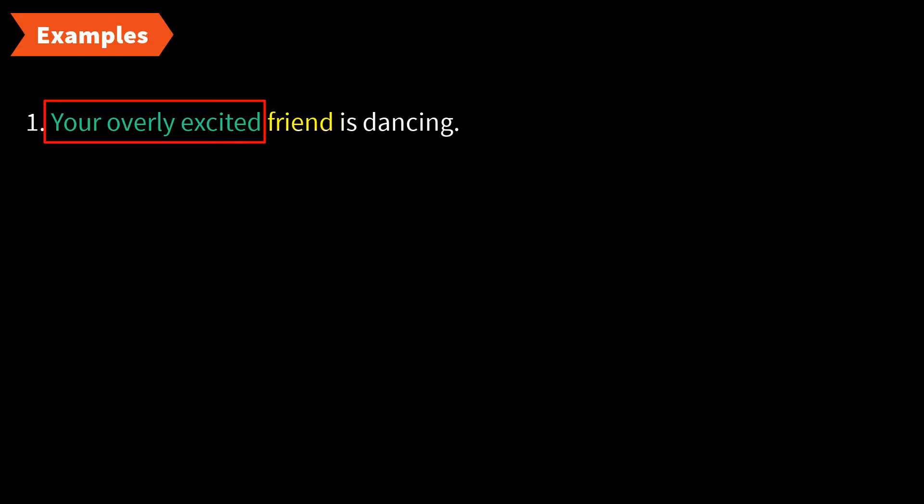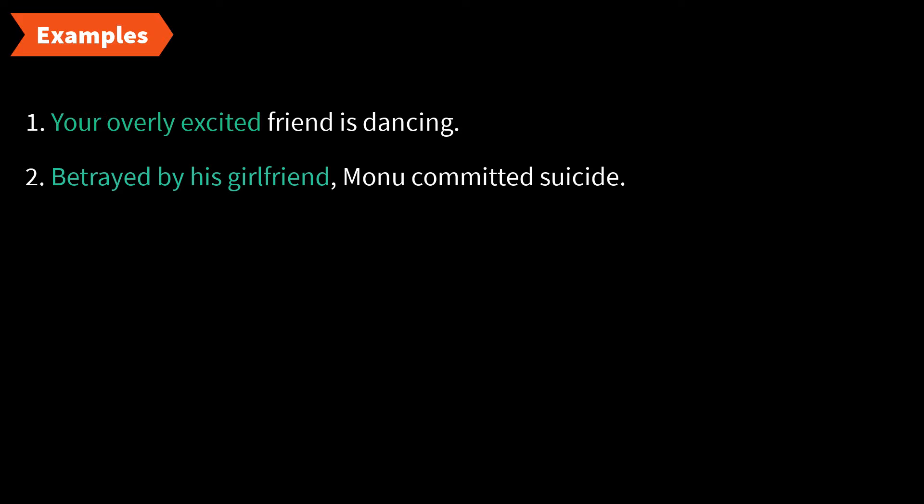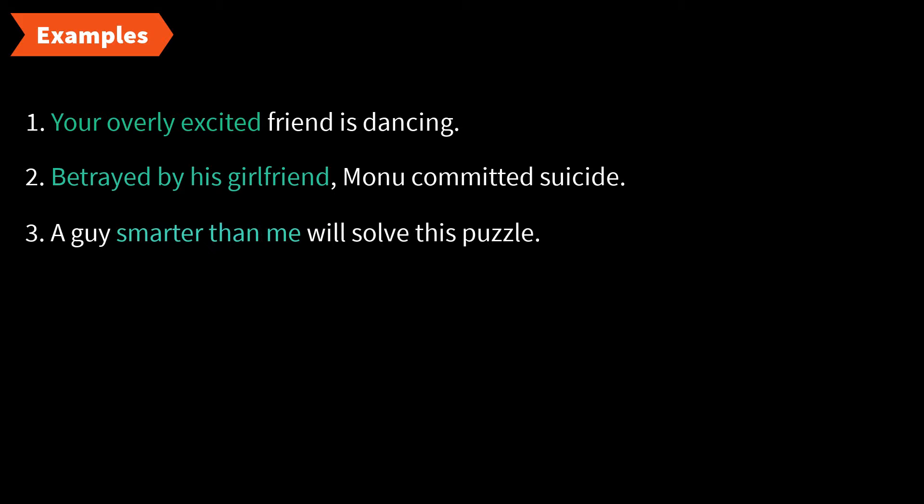'Your overly excited friend is dancing' — 'overly excited' is the adjective phrase modifying the noun 'friend,' giving information about the noun 'friend.' Next example: 'Betrayed by his girlfriend, Monu committed suicide.' Here, 'betrayed by his girlfriend' is the adjective phrase coming at the beginning of the sentence, giving information about the noun 'Monu.'